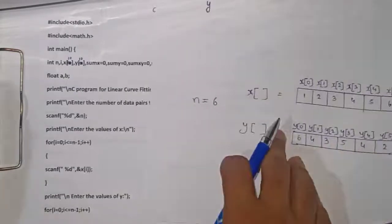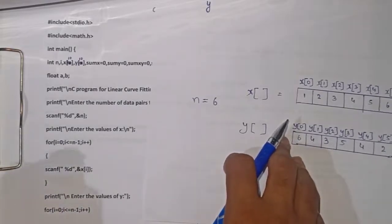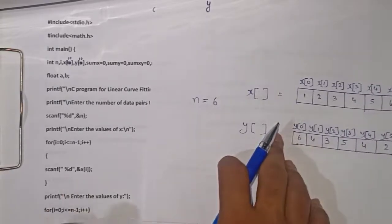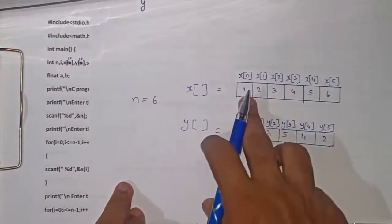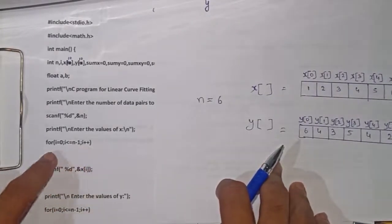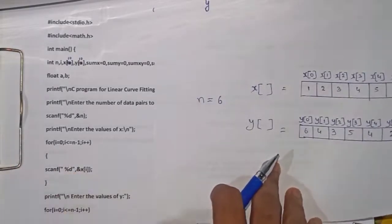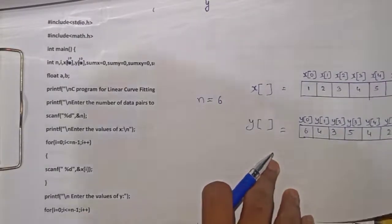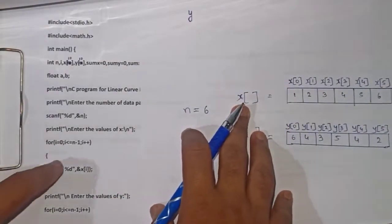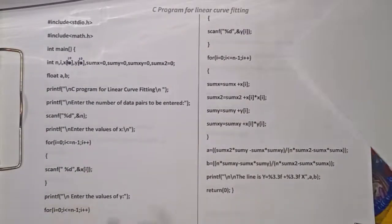For the first iteration, i will be 0. The scanf function reads the value from the user and stores it in x[0]. Assume the user has entered 1, so 1 goes into x[0]. Then i is incremented, and for the second iteration i will be 1, reading the next value into x[1]. This continues until i equals n-1. Similarly, we will read the y values — this next for loop is for reading the y values.